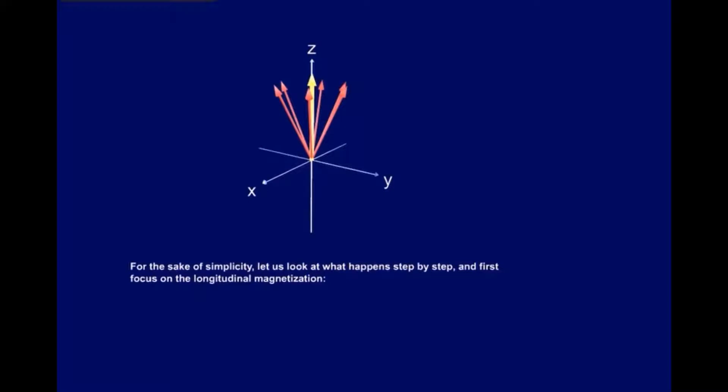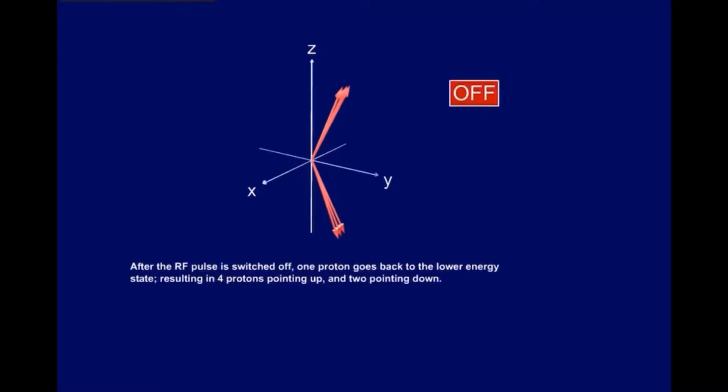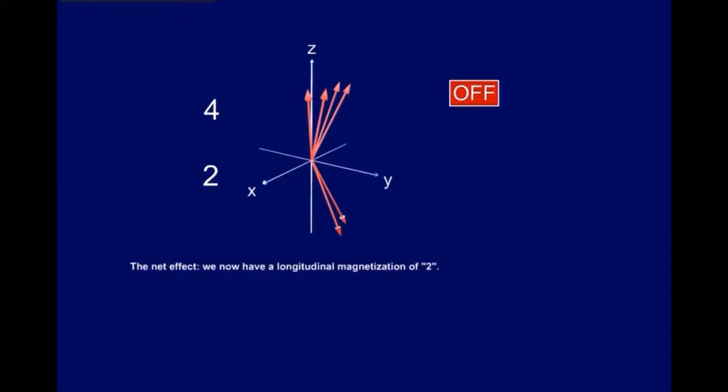For the sake of simplicity, let us look at what happens step by step, and first focus on the longitudinal magnetization. After the RF pulse is switched off, one proton goes back to the lower energy state, resulting in four protons pointing up and two pointing down. The net effect? We now have a longitudinal magnetization of two.